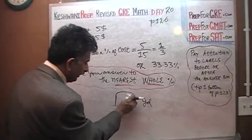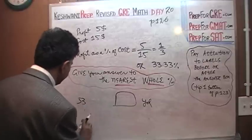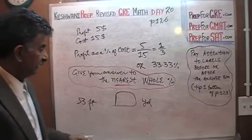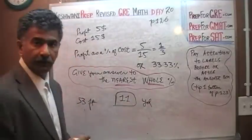If you solve the problem and the answer comes out as 33 feet but outside it says yards, then you've got to put down 11. And vice versa.